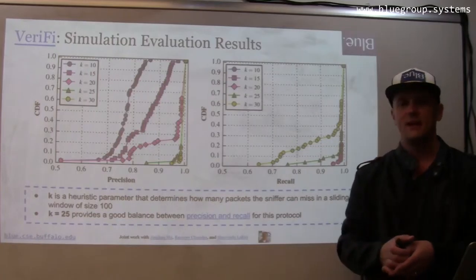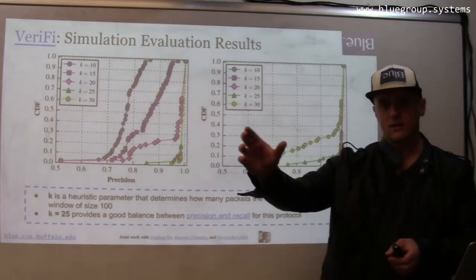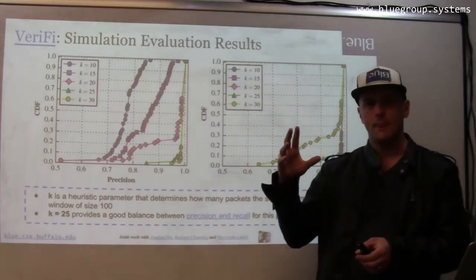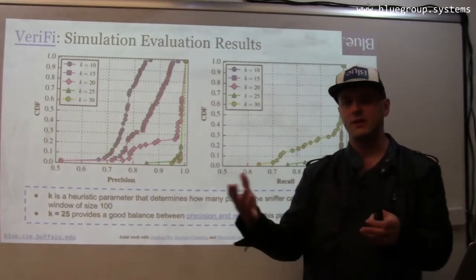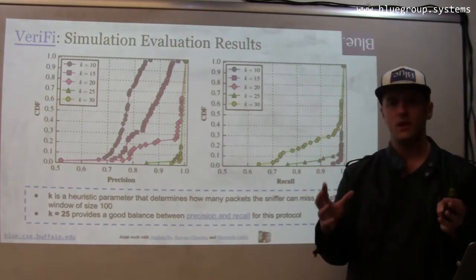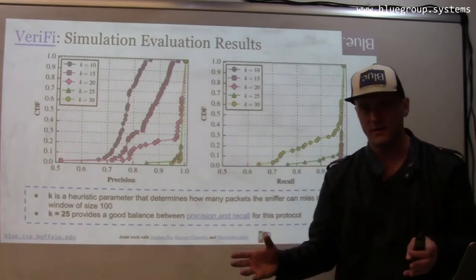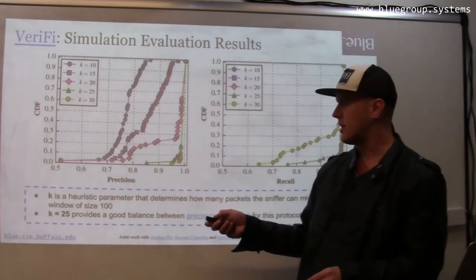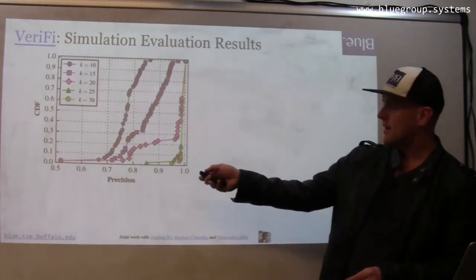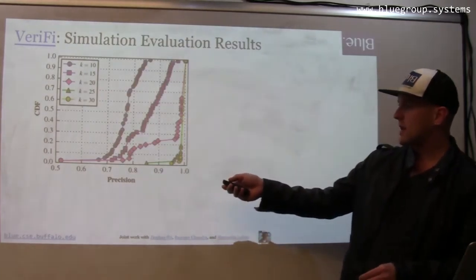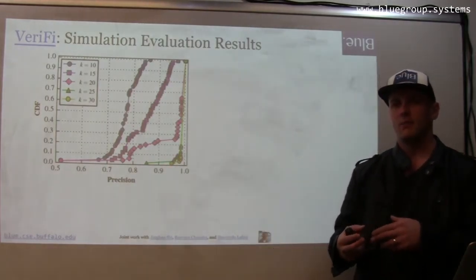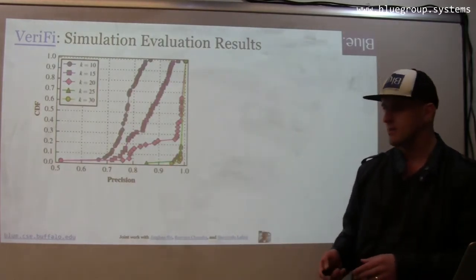What K says is that if a particular mutated trace would require the search to miss more than this many packets in a particular sliding window, we just abandon that part of the search and report a violation. For this particular protocol, we can see that the precision gets quite good once we get up to about K equals 25, so we're allowing the protocol to drop 25 packets in a particular window.